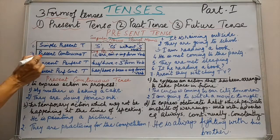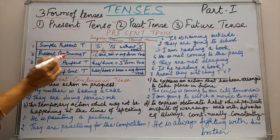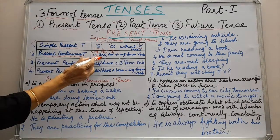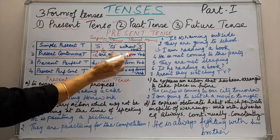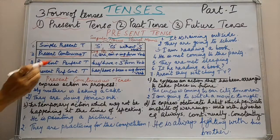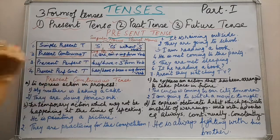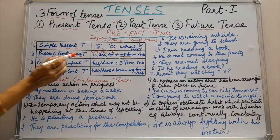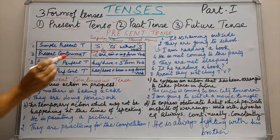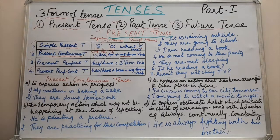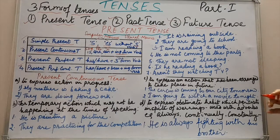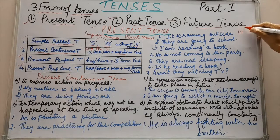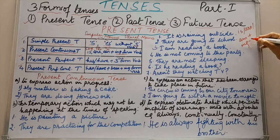The next form is present continuous tense. For present continuous tense, we use is, are, or am plus the ing form of verb. Is is used with singular nouns, are is used with plural nouns, and am is used with I. So the formula is: is/are/am plus ing form of verb.